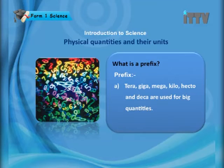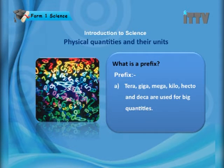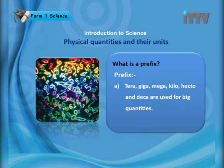Prefixes come in two different types. For big quantities, the prefixes are: tera, giga, mega, kilo, hecto, and deca. These represent large quantities.